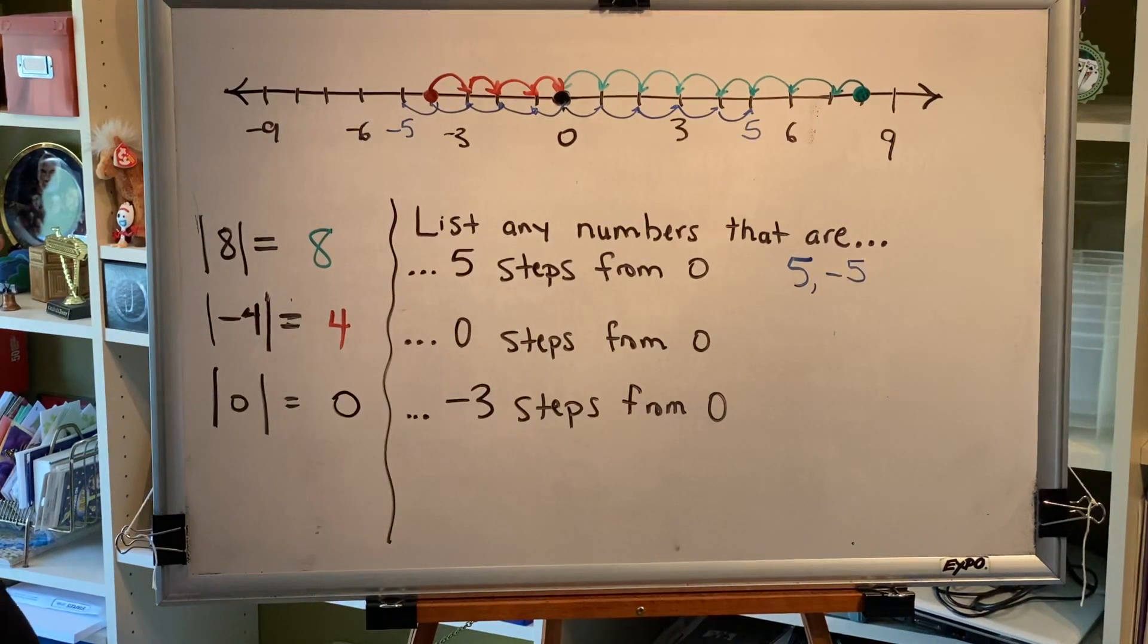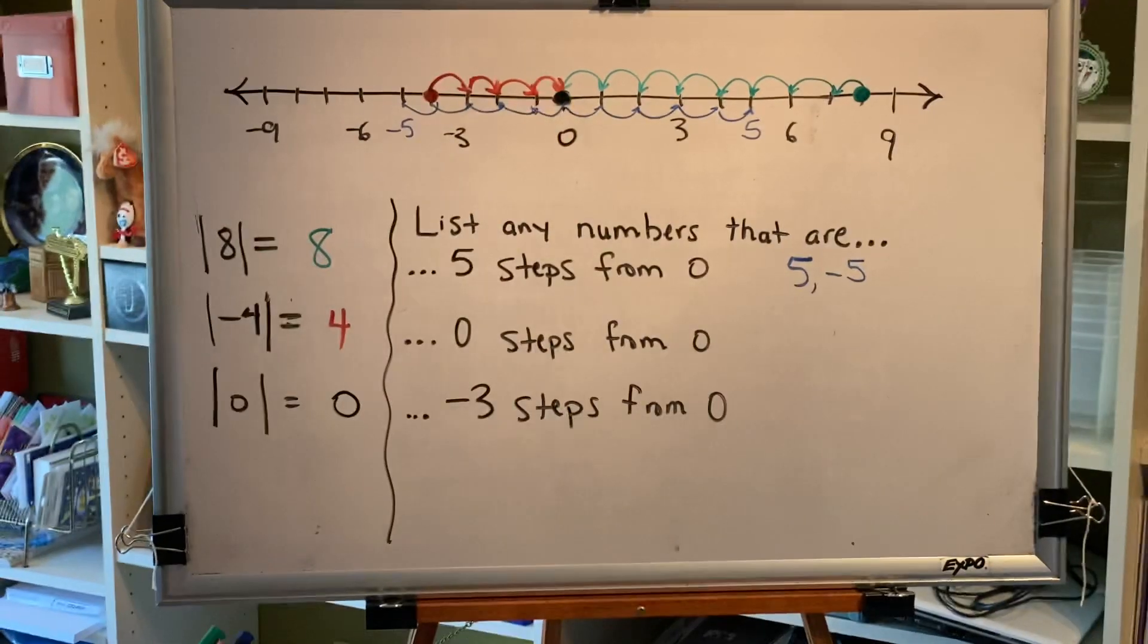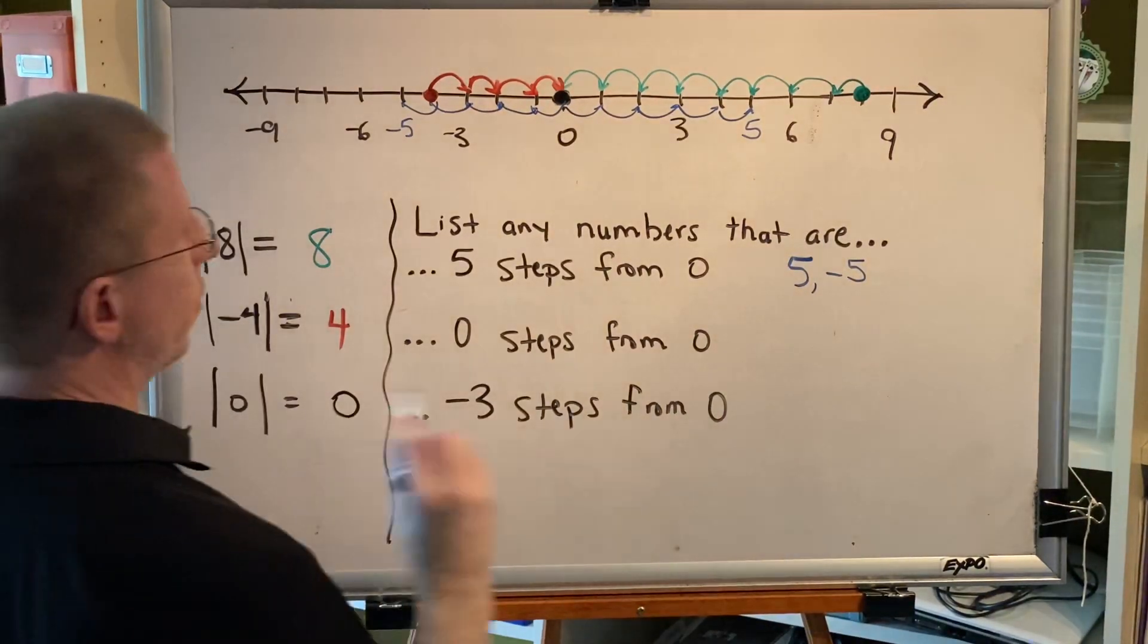All right, list any numbers that are zero steps from zero. Well, if you're standing at zero and you go zero steps, you're still at zero. So, the answer is zero.